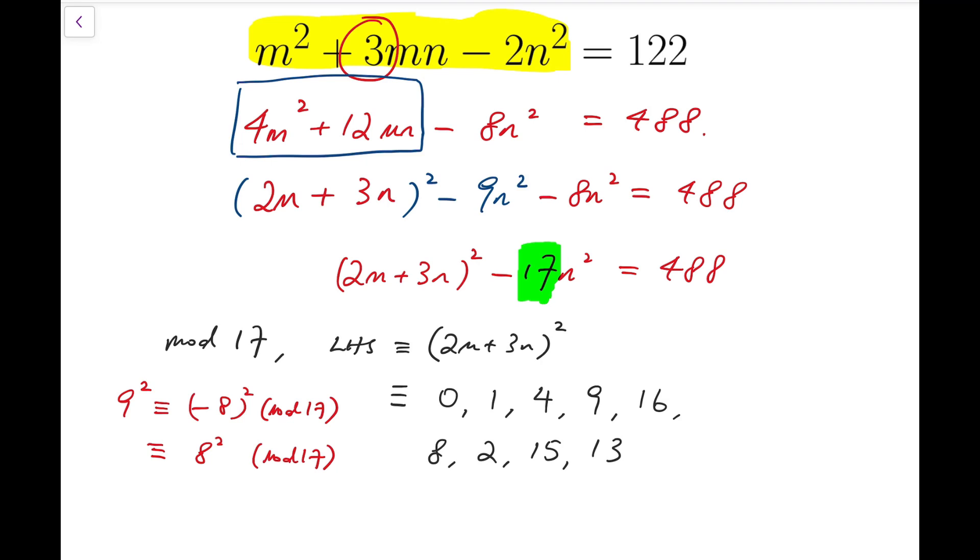So that means all the possible values of squares mod 17 are 0, 1, 2, 4, 8, 9, 13, 15, and 16. Those are the only possible values.